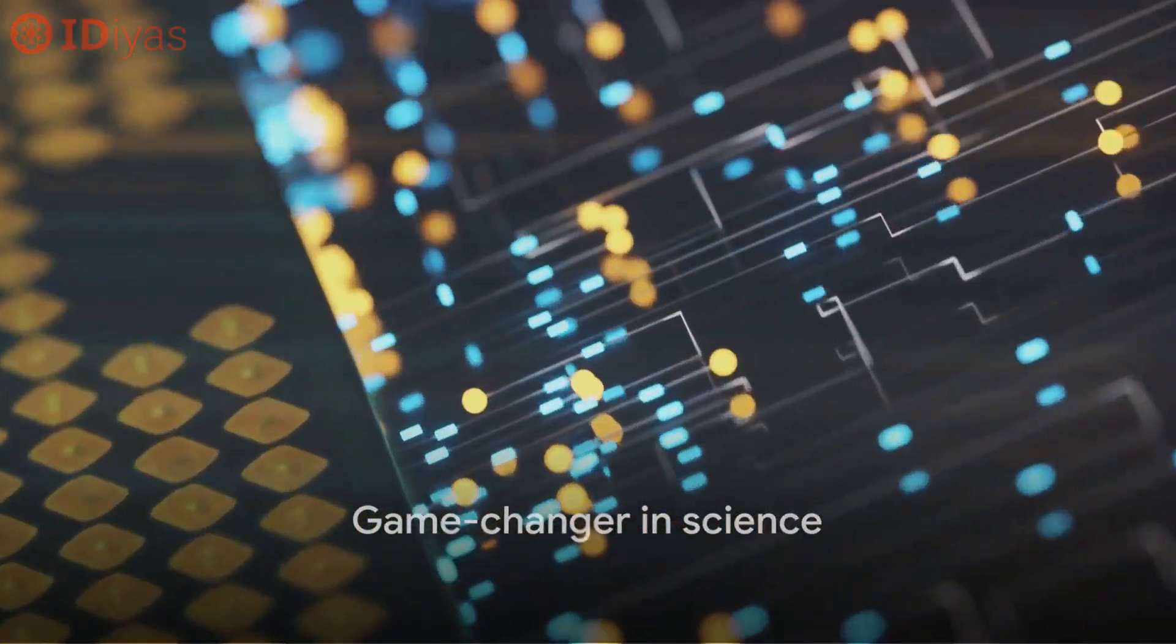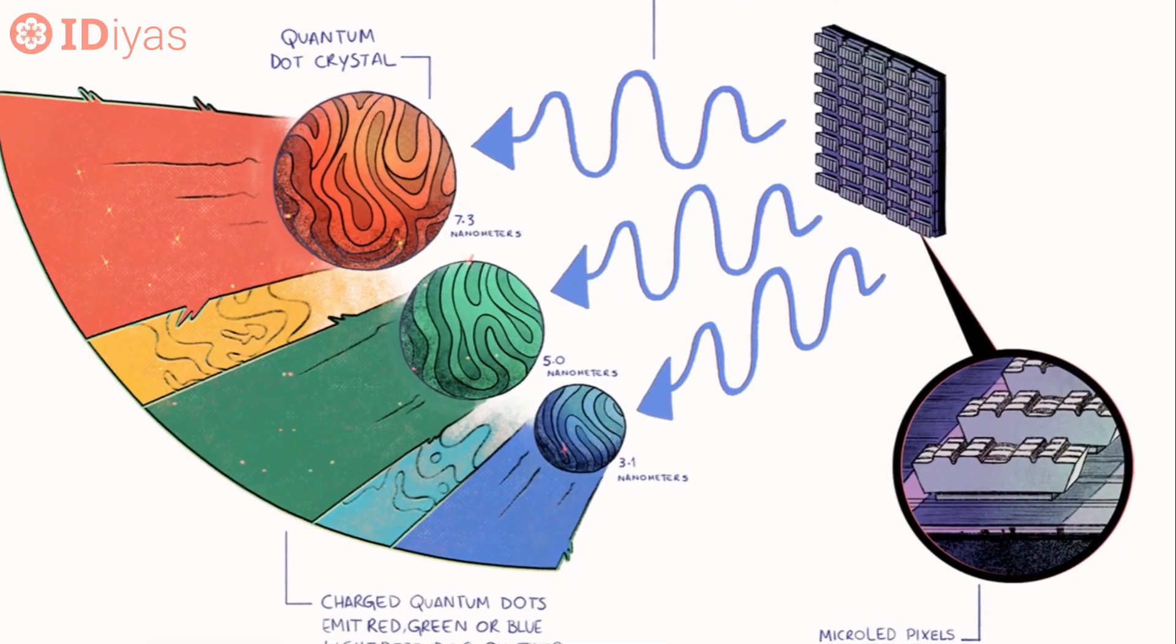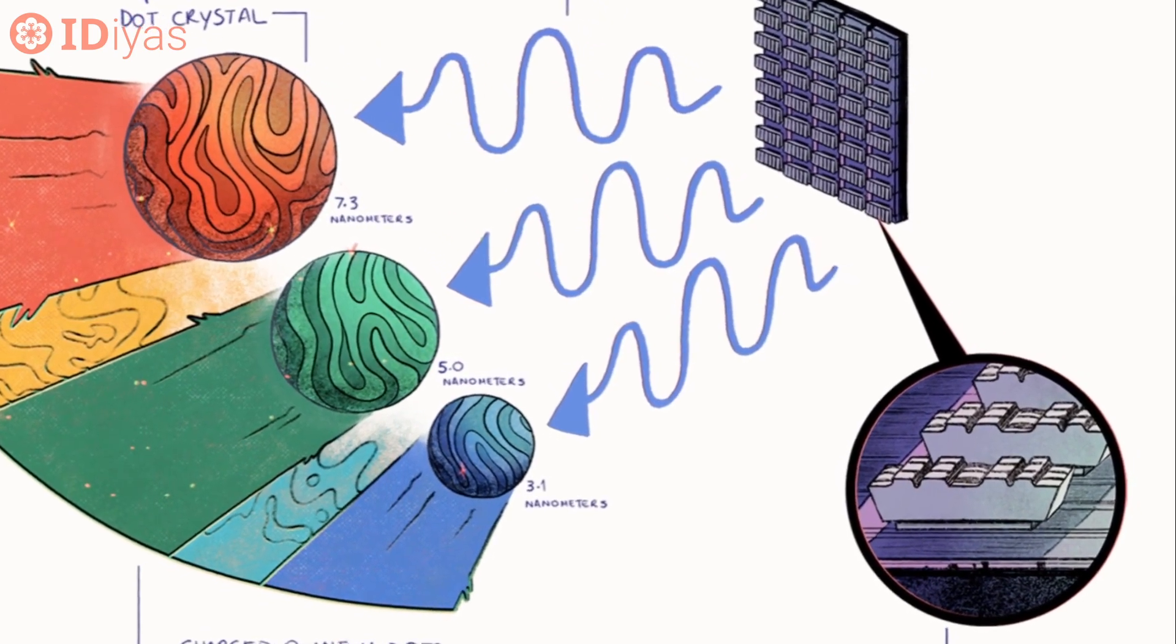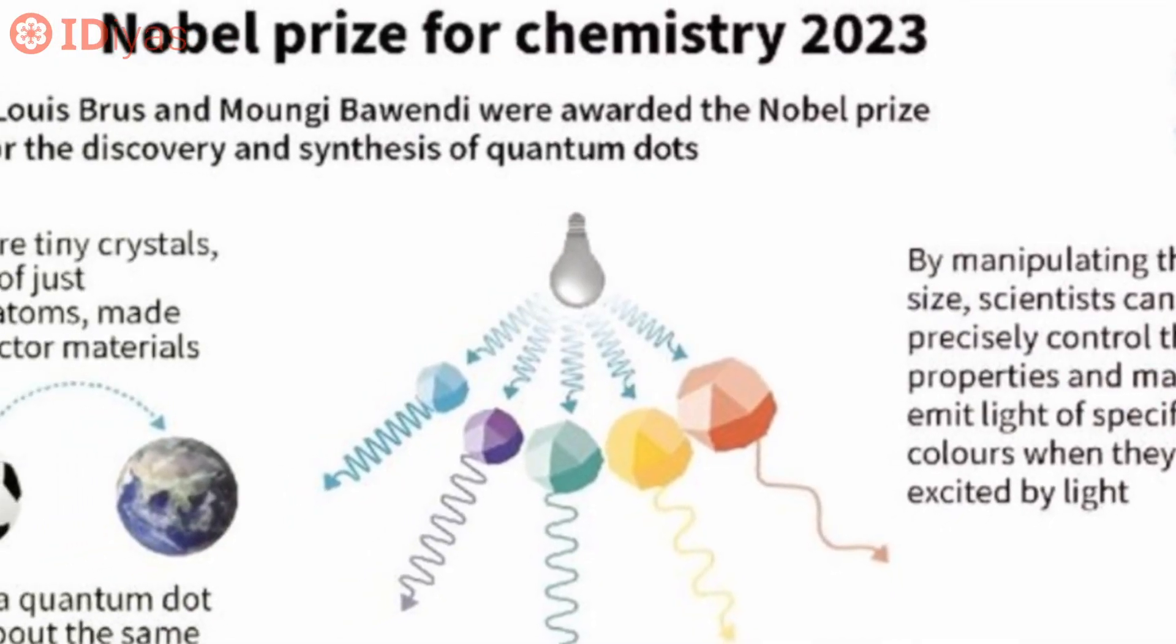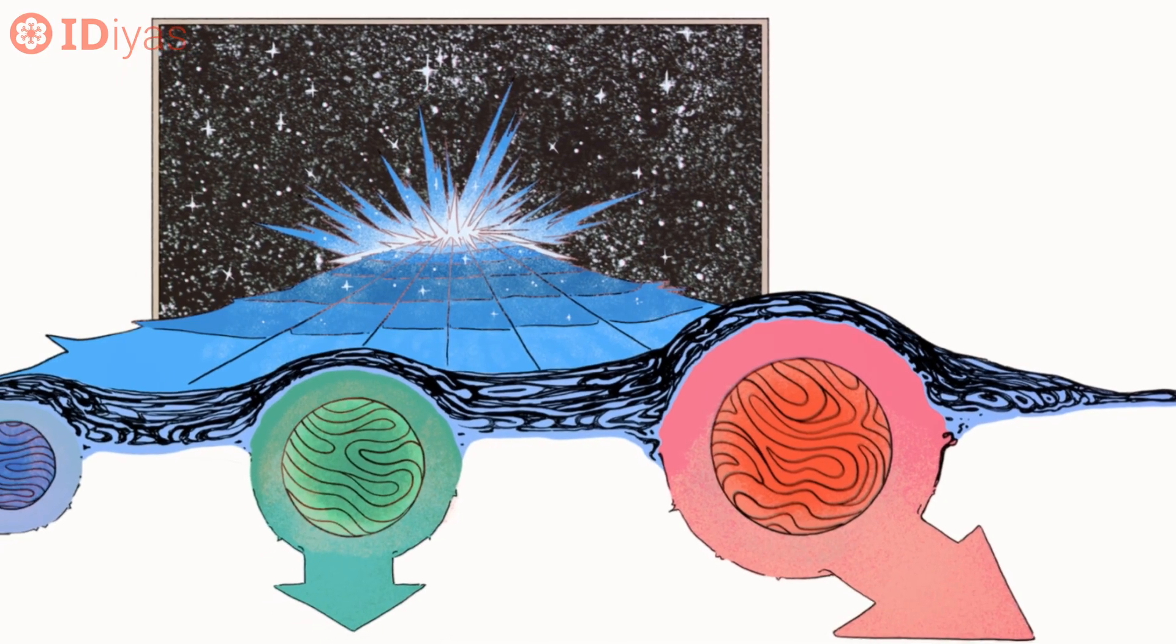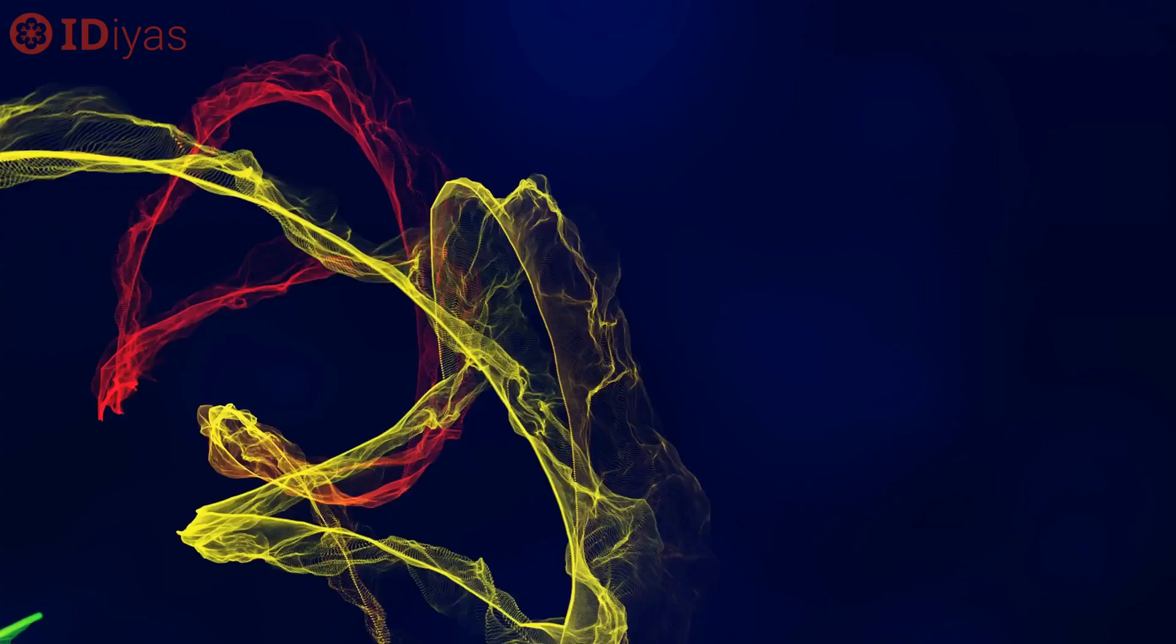Before Burwendi, quantum dots were like wild horses, full of potential, but untamed. After Burwendi, they were more like thoroughbreds, ready for the race. His method made it possible to produce quantum dots consistently, with the desired qualities, and without the previous variations in size and quality.